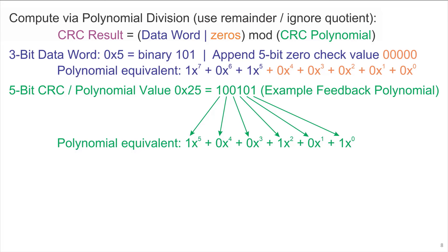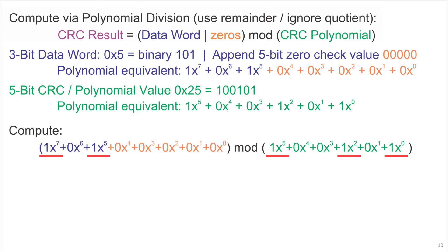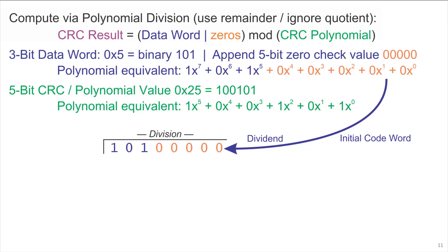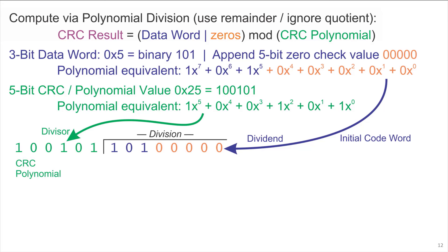To compute the CRC's check value, we compute x to the 7th plus x to the 5th mod x to the 5th plus x squared plus 1. We do this computation using a somewhat familiar long division algorithm except with all the digits being binary. The division takes down the coefficients of the polynomial x to the 7th plus x to the 5th with the other terms being 0, and a divisor x to the 5th plus x squared plus 1, and from there we compute a long division.